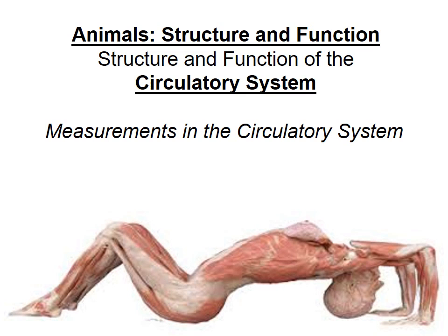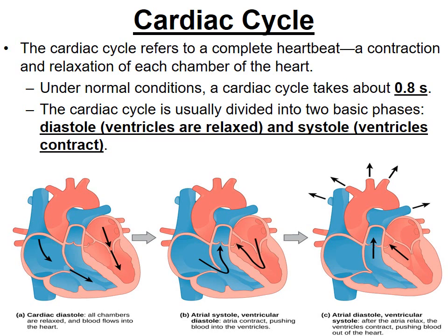This is part two of the circulatory system video. We're going to focus on measurements to monitor your circulatory system health, starting with the cardiac cycle — the sequence of events of blood going into the right side, being pumped out to the lungs, coming back to the left side, and being pumped out to the body. We'll focus mostly on muscle movement and the signals sent throughout the heart to tell it when to relax and when to contract.